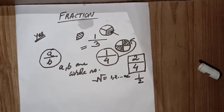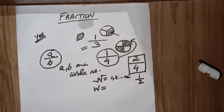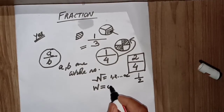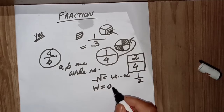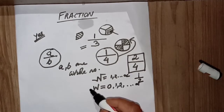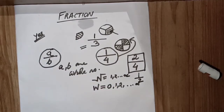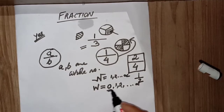Whole numbers, denoted by W, are defined when we introduce zero into the counting system. The number line starts from zero, one, two, and goes up to infinity — that is called the whole number line. In natural numbers there is no zero, but in whole numbers there is zero. The smallest whole number is zero.